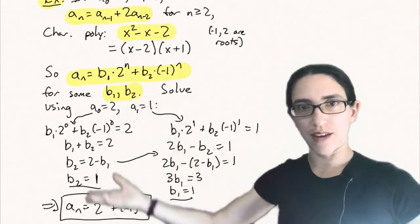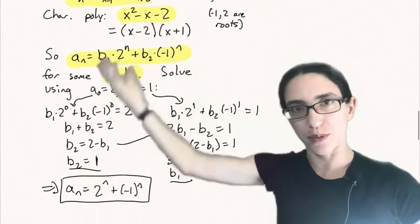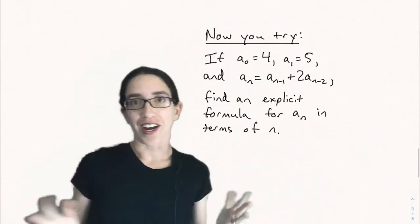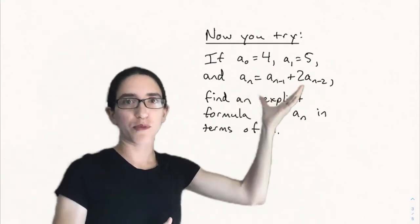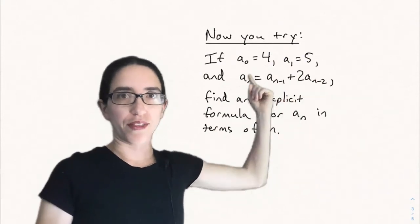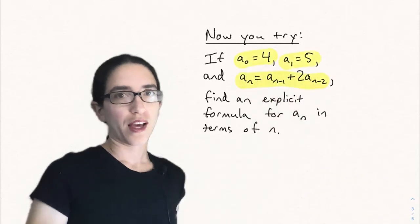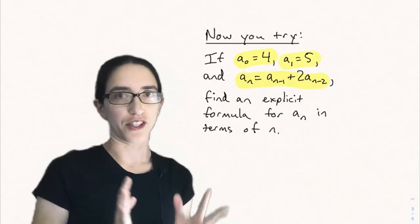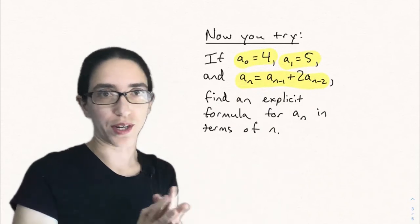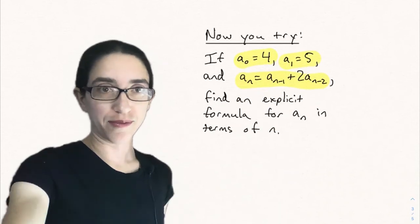Now you try: use the same recursion a_n equals a_{n-1} plus 2·a_{n-2}, but with different initial values a_0 equals 4 and a_1 equals 5. Find an explicit formula for a_n by using the roots of the characteristic polynomial and solving for the coefficients b1 and b2. That's all for today — see you next time.